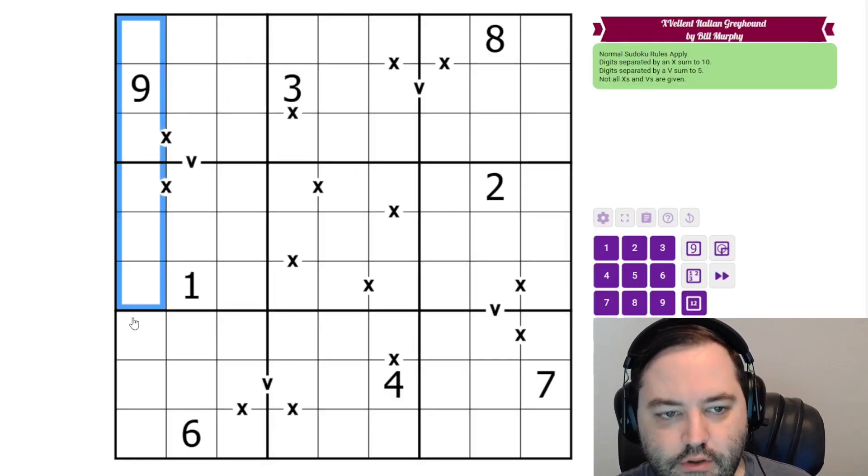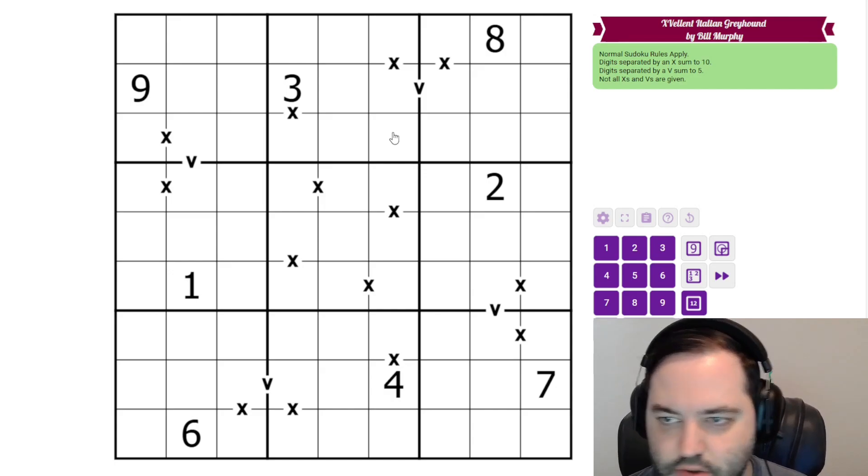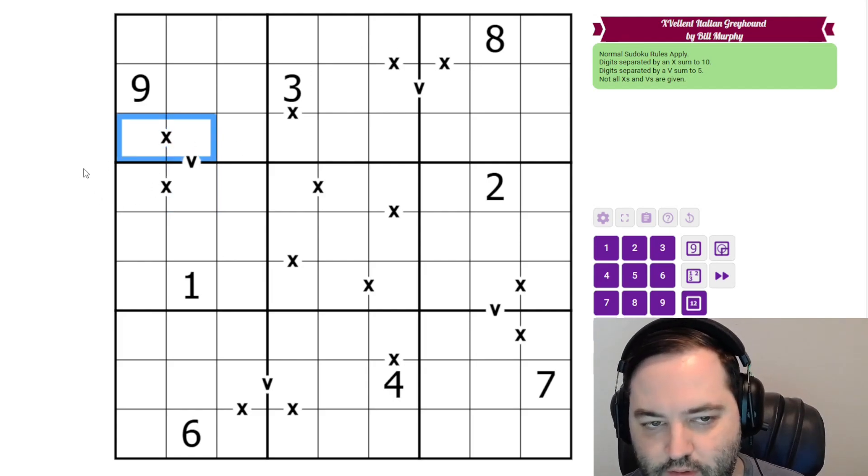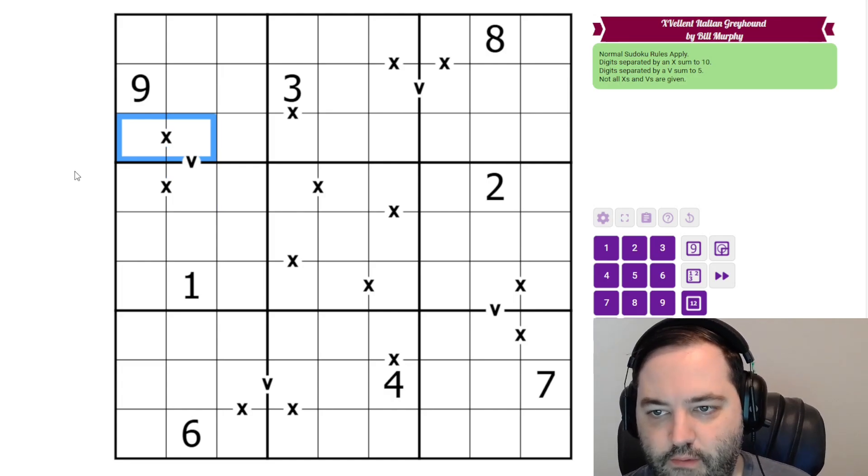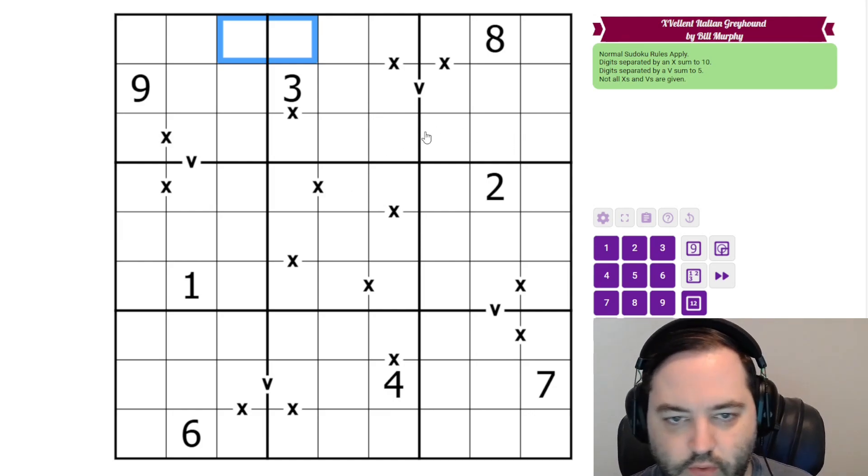So we have 1 to 9 in each row, column, and 3 by 3 box for normal Sudoku rules. And then X-V pairs, we have some letters in the grid which are actually Roman numerals. V means that the sum of the digits next to the V is 5, and X means the sum is 10. Since this is X-V pairs, we don't know anything about other pairs of digits. So these could sum to 10 or to 5, we just don't know. Those are the rules.